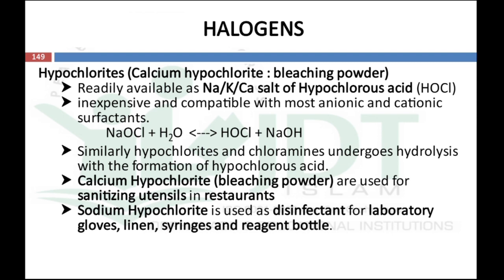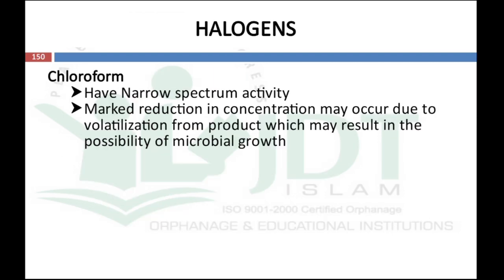Hypochlorites — usually known as bleaching powder (calcium hypochlorite) — are readily available as sodium, potassium, and calcium salts of hypochlorous acid. They are inexpensive and compatible with most anionic and cationic surfactants. When hypochlorite reacts with water it forms hypochlorous acid, and the mechanism of action is the same as chlorine. Calcium hypochlorite (bleaching powder) is used for sanitizing utensils in restaurants. Sodium hypochlorite is used for disinfection of laboratory gloves, linen, syringes, and reagent bottles. Chloroform is a narrow-spectrum disinfectant, but marked reduction in concentration due to volatilization may result in the possibility of microbial growth after treatment.